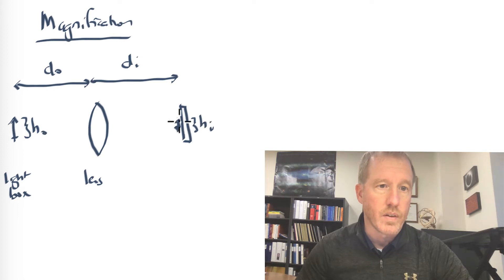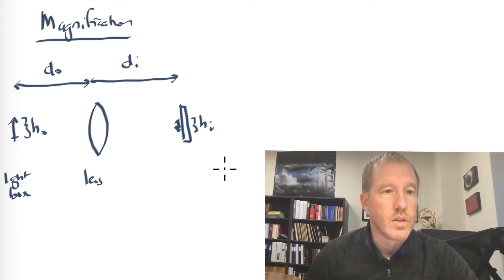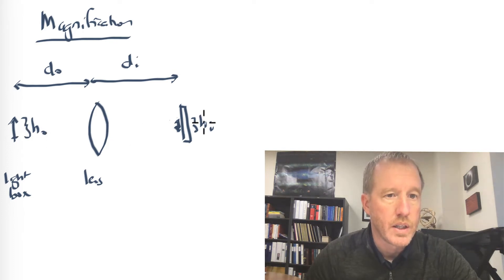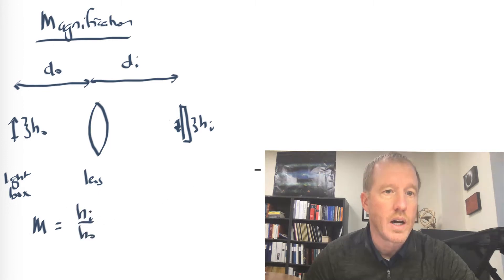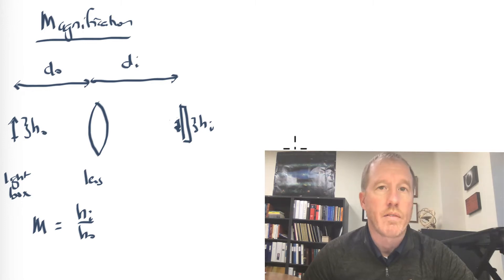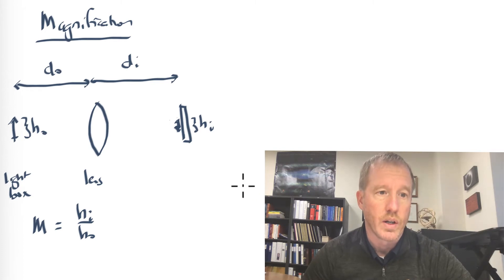It's an inverted image, so it looked like that. The relationship between the height of the object and the height of the image is called the magnification. It's the height of the image divided by the height of the object. So if the image is bigger than the object, you have a magnification greater than one. And if you have the image less than the object, you have a magnification of less than one.